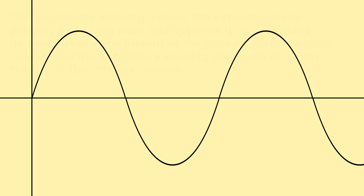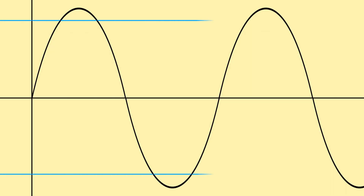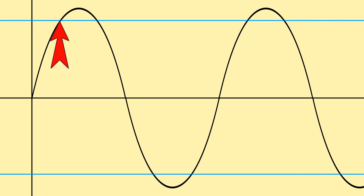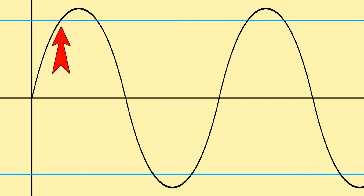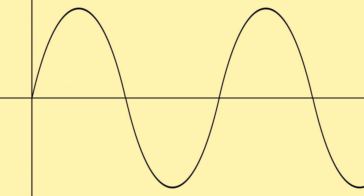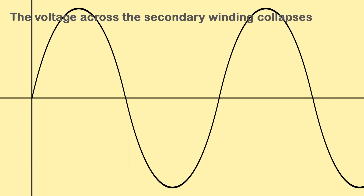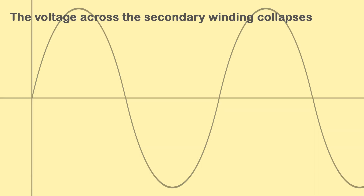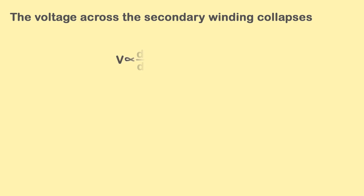Now suppose the primary current increases. After a certain value of the primary current, the CT core becomes saturated. This means the primary current can no longer produce flux beyond the maximum flux-carrying capability of the core. As a result, the primary current stops producing additional flux at that magnitude, and there will be no further increase in flux. Hence, the flux waveform becomes flat from that point. Consequently, the voltage across the secondary winding collapses, because according to Faraday's law, the induced voltage is directly proportional to the rate of change of flux linkage with respect to time. When this rate becomes zero due to core saturation, no voltage is induced in the secondary winding, leading to voltage collapse.